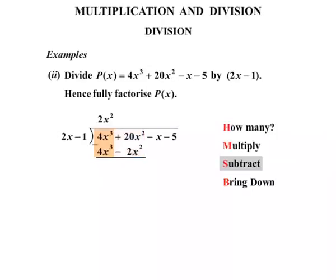Subtract: the 4x cubed minus 4x cubed is gone. Then 20x squared minus minus 2x squared — that's plus — 20x squared plus 2x squared gives 22x squared. We now bring down the next term, which is minus x, and start all over again. How many times does 2x go into 22x squared? The factor would be plus 11x. Then multiplying 11x by 2x minus 1 gives 22x squared minus 11x. Then we subtract, bringing down minus 5.